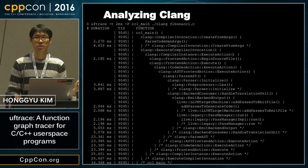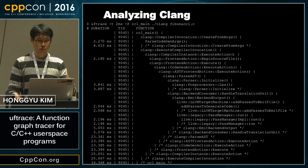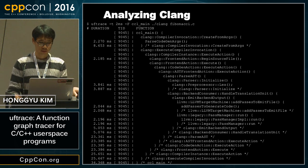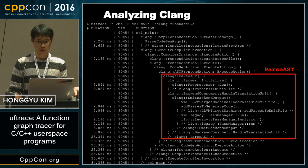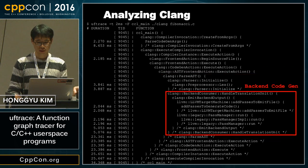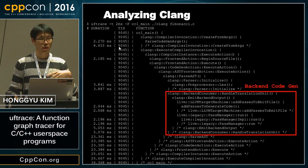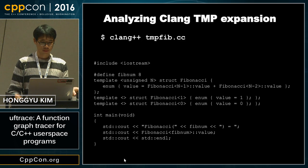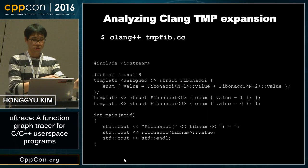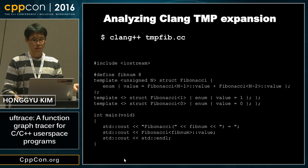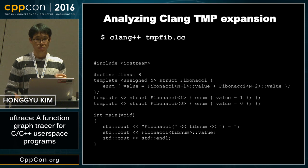You can also analyze the clang compiler itself internally. Those are all clang functions, and as you can see you can see parse AST and back-end code generation. Because I put a time filter here, if you decrease the time filter you can see more results.